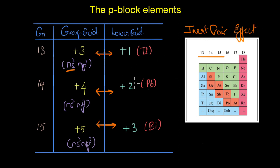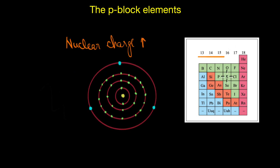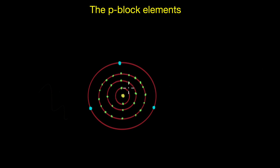When we go down the periodic table, a couple of things happen. Firstly, the nuclear charge increases because we have more protons in the nucleus. At the same time, newer shells get added with successive periods, and with that the inner electrons also get filled. These inner electrons get attracted towards the nucleus but also push the outer shell electrons away from themselves due to electron-electron repulsions.